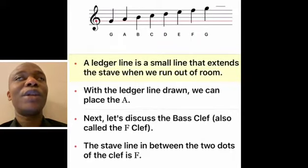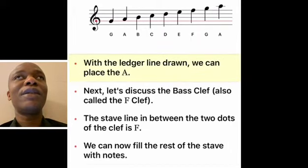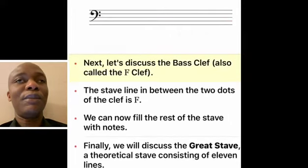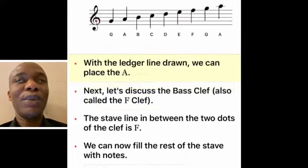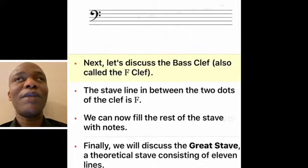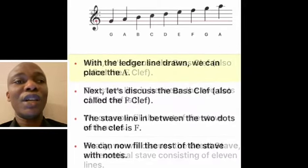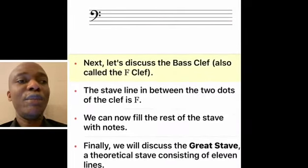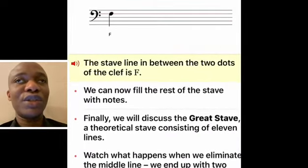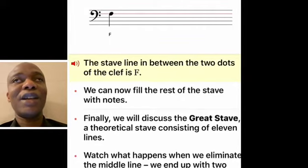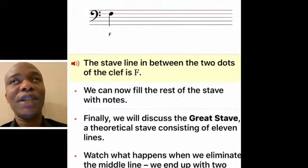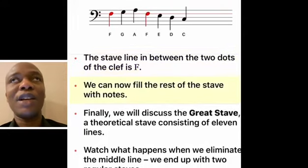Now we look at the bass clef. The symbol of a bass clef has got two dots. In between those two dots is a line and that line is called F. The bass clef is called the F clef.